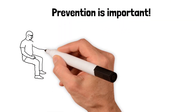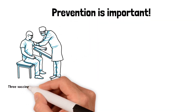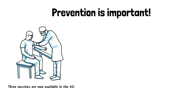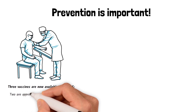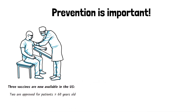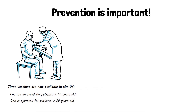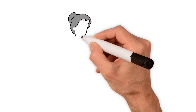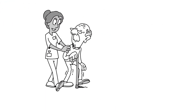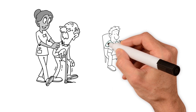Three vaccines are now available in the U.S. for prevention of lower respiratory tract disease caused by RSV. Two are approved for adults 60 years of age and older, and one for adults 50 years and older. These vaccines lead to an immune response against the RSV-F protein and prevent lower respiratory tract disease in older adults. Adults 50 years of age and over may receive a single dose of RSV vaccine if they decide with their healthcare provider that it is the right choice for them.